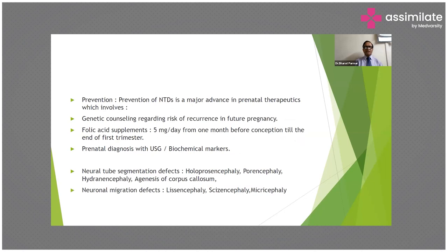Prevention of neural tube defects involves genetic counseling regarding risk of recurrence, folic acid supplementation at 5 mg per day from one month before conception until the end of the first trimester, and prenatal diagnosis by sonography and biochemical markers.